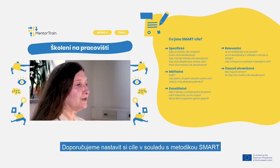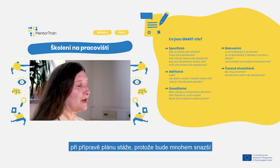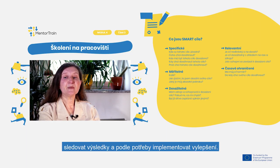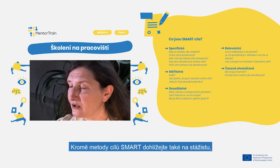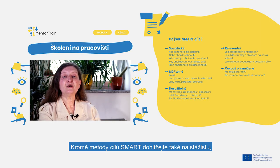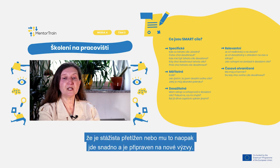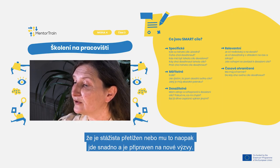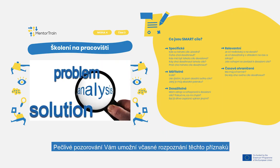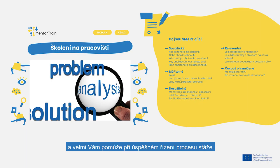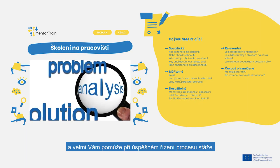We recommend that you set your goals in accordance with the SMART methodology while preparing the apprenticeship plan, as this will make it much easier to track the results and implement improvements as needed. In addition to the SMART goals method, keeping a good eye on the apprentice is crucial for promptly identifying symptoms that indicate that the apprentice is overloaded or standing still and ready for new challenges. Close observation will give you early recognition of these symptoms and will greatly assist you in successfully managing the apprenticeship process.